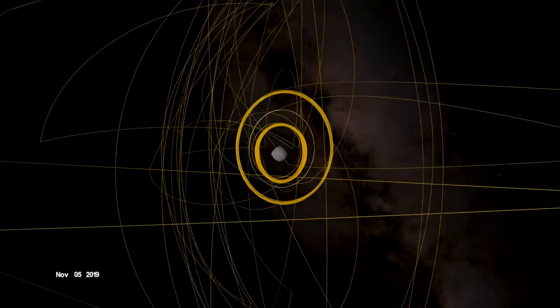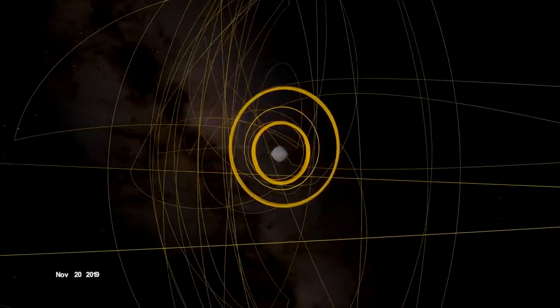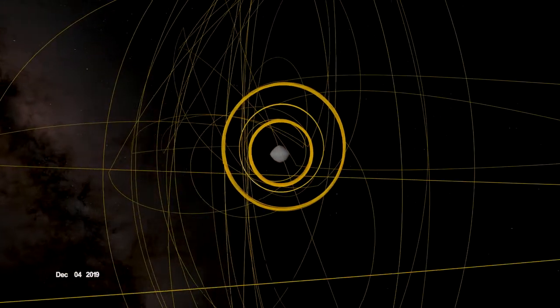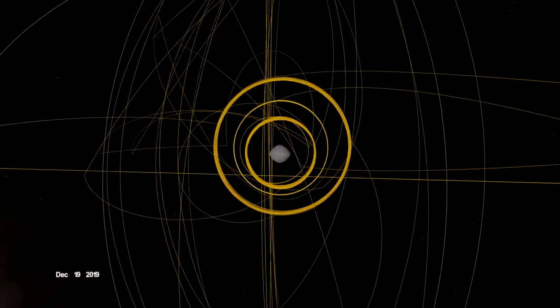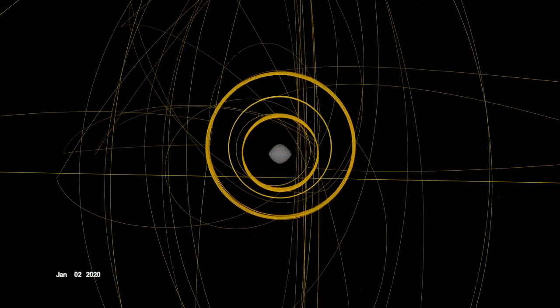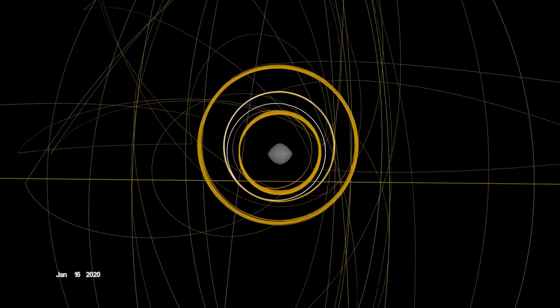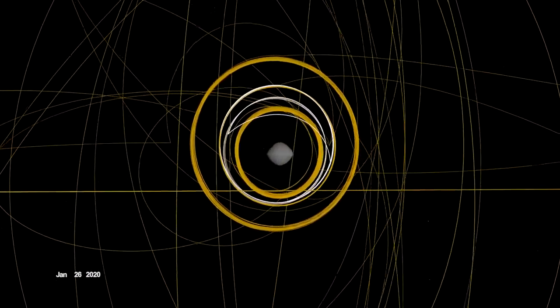OSIRIS-REx concluded its first year at Bennu back in orbit, circling the asteroid's terminator, or boundary between day and night. Here, outside forces acting on the spacecraft are balanced, allowing it to orbit within the same plane over time.